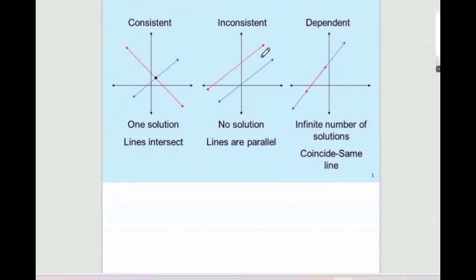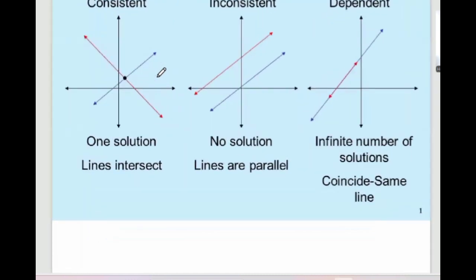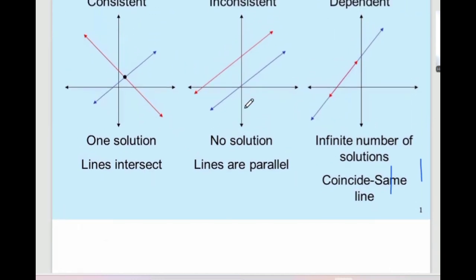Here we talk about solutions. If you see two intersecting lines that intersect at one point, it has one solution — one point. These two lines are parallel — no solution. The third case, these two lines overlap, so there are infinitely many solutions.